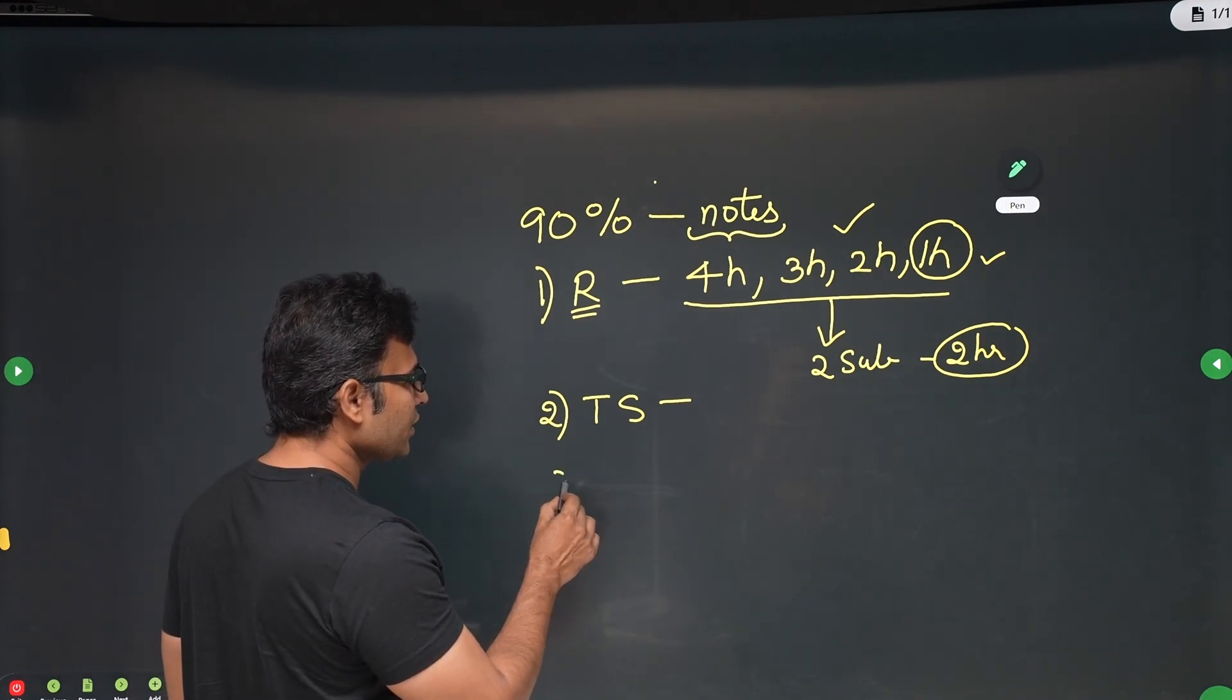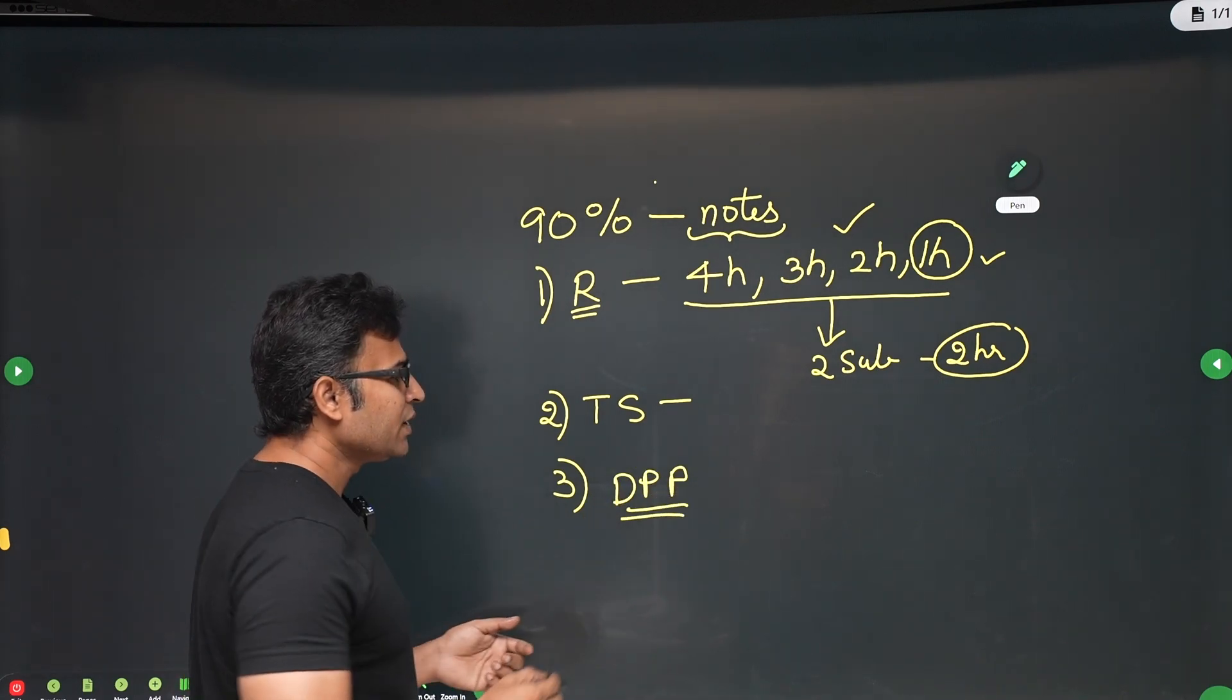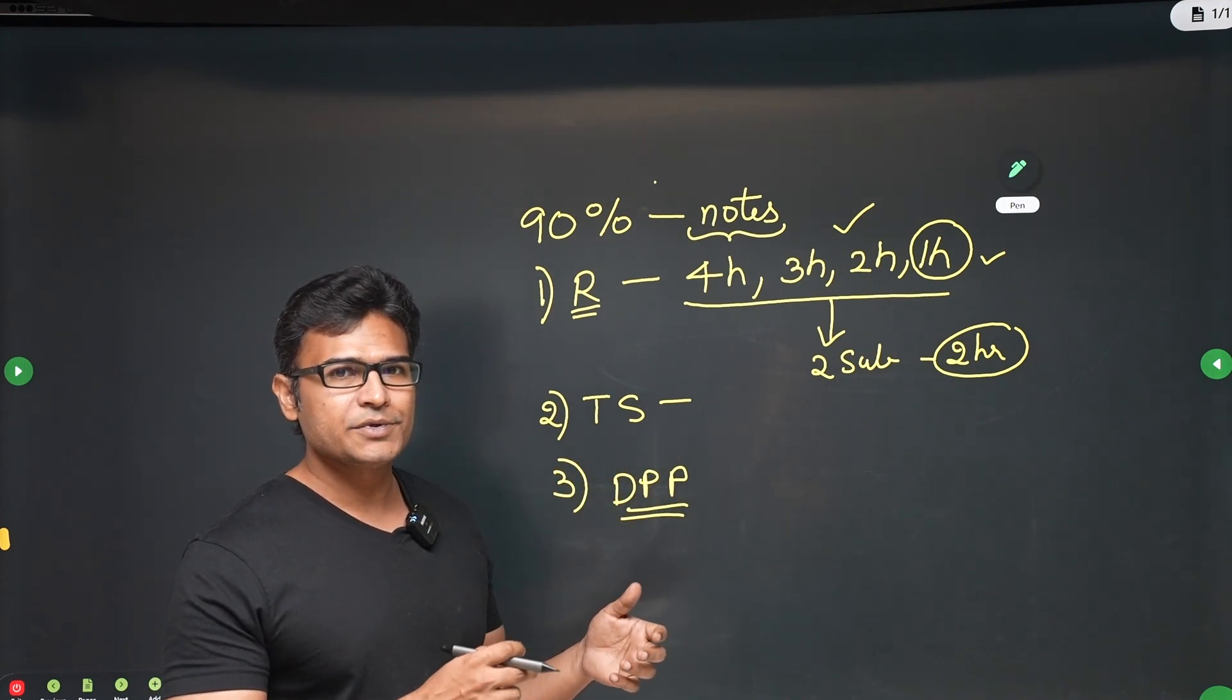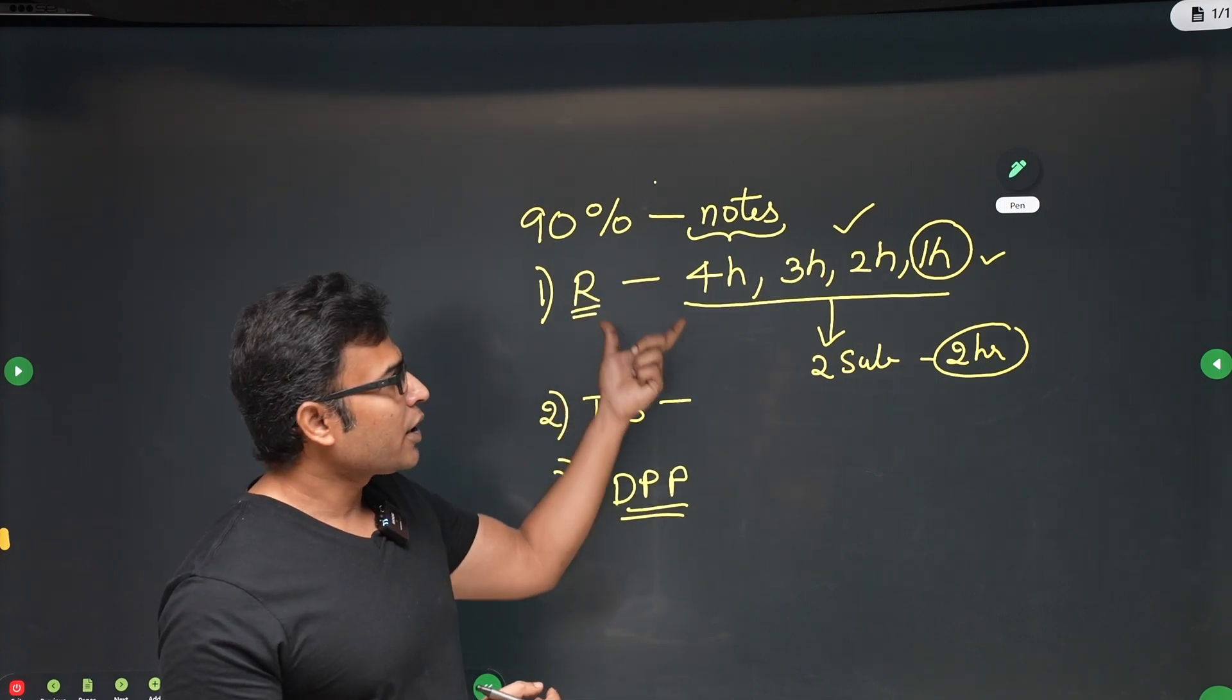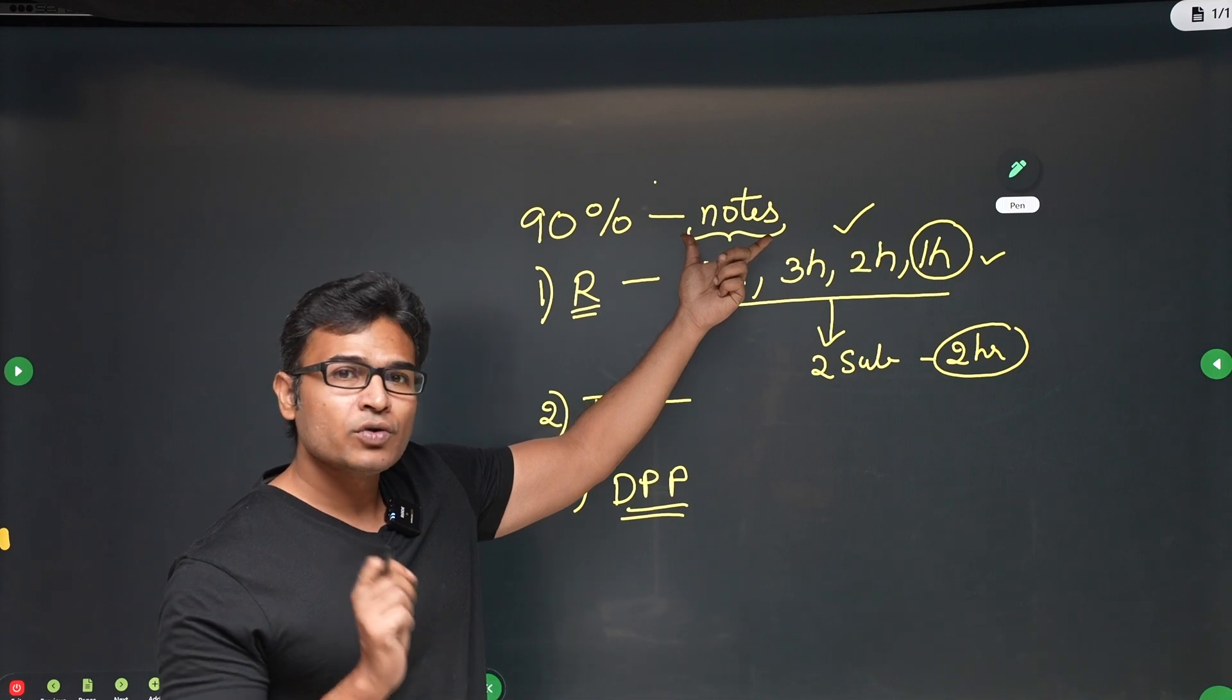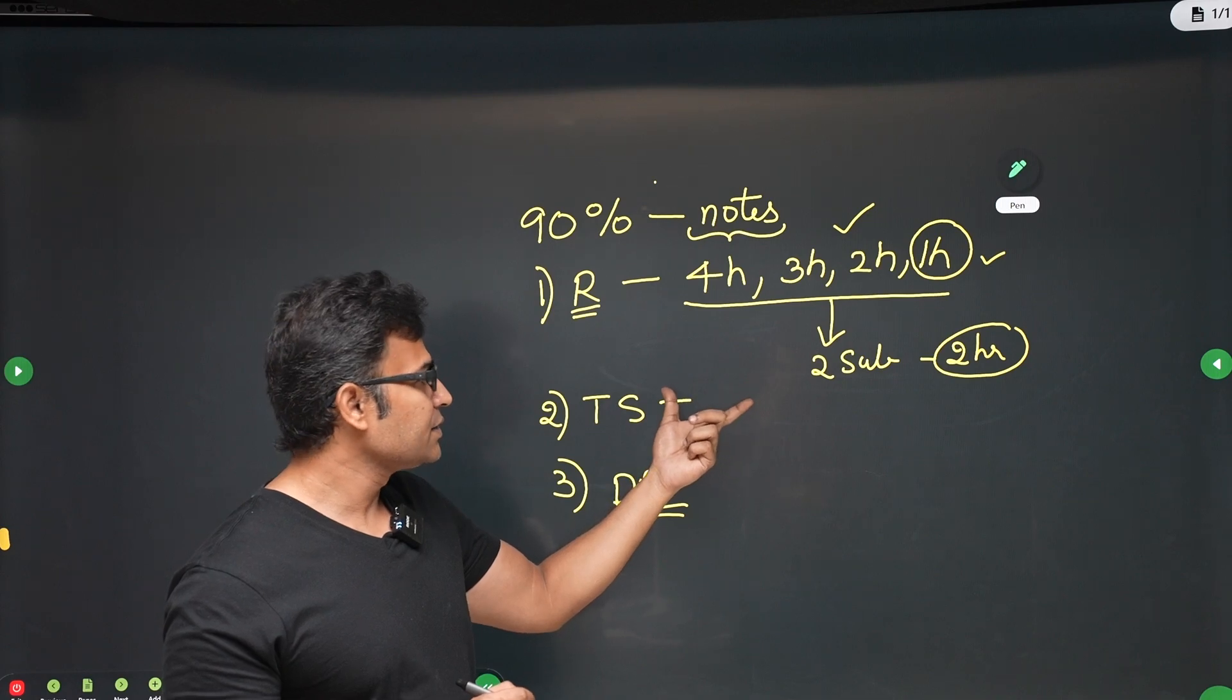And the third most important thing, last priority, you give it for DPP, daily practice problems. So daily practice problems will also help you in brushing up the concepts. And if you have missed out any concepts in the class notes, you will learn it in the DPPs. So this way you prioritize. First, notes should be there, your own handwritten notes where you have written important points, then revision, then test series, then DPP.